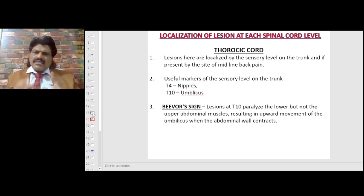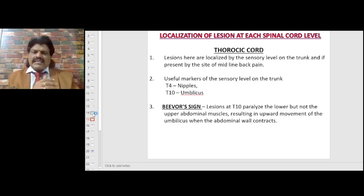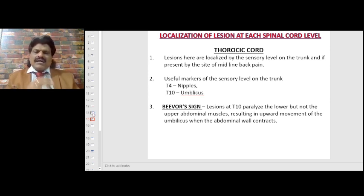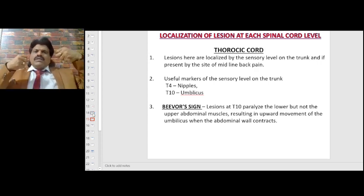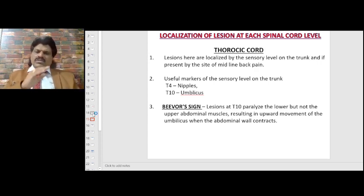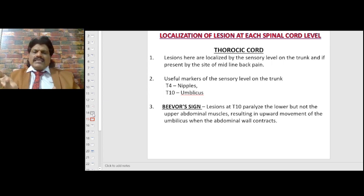Thoracic cord lesions are localized by the sensory level on the trunk. Useful markers: T4 corresponds to the nipple, T7 to the umbilicus. An important sign is Beevor's sign — with a lesion at T10 and below, the lower abdominal muscles are paralyzed. When the patient sits up from the lying position, the upper abdominal muscles contract and pull the umbilicus upward, indicating a lesion at T10 paralizing the lower but not upper abdominal muscles.